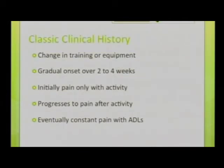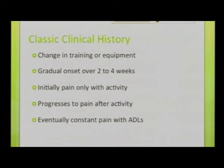The classical clinical history is a change in training or equipment. There is gradual onset over two to four weeks, with pain initially only on activity, progressing to pain after activity as well over time. Eventually, constant pain develops.